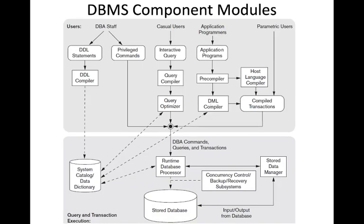The DML compiler compiles the DML commands and interacts with the system catalog to check data structures. The pre-compiler also works with the host language compiler — for example, the C++ compiler or Java compiler — which compiles the rest of the code. After both parts are compiled, together they form the compiled transactions, or canned transactions, which are given to the runtime database processor.